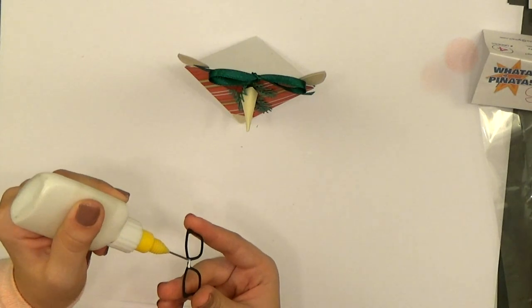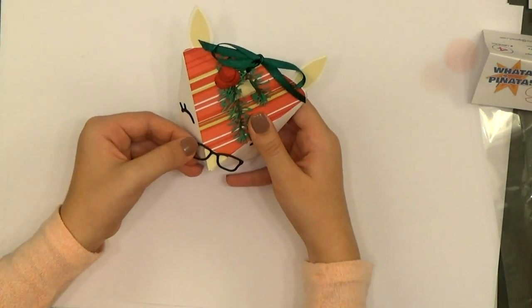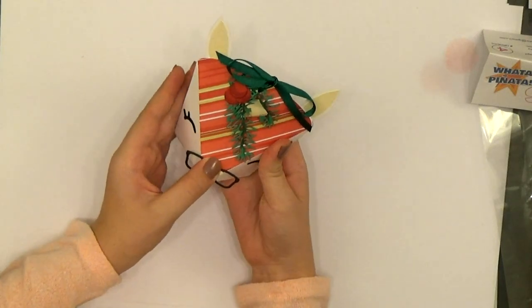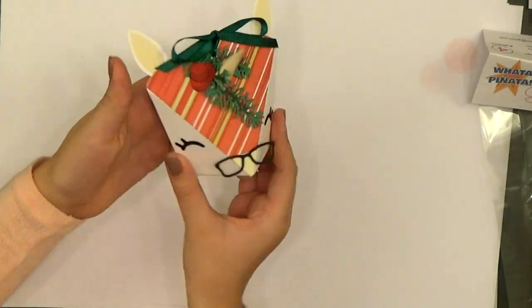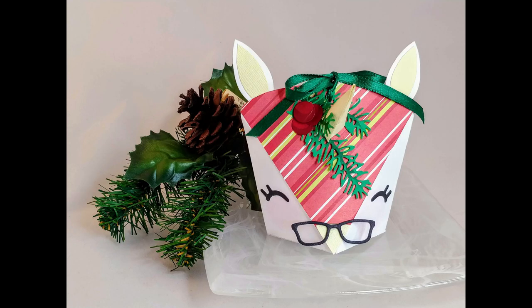And then the very last thing is a pair of glasses, which is actually three pieces of black cardstock that we cut and glued together so it would be nice and firm and not floppy glasses. And that's it—the box is pretty much done.